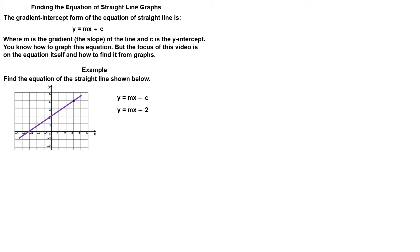To find the gradient, we choose two known points. Starting at the y-intercept, from left to right, go right 3 units and up 2 units. Therefore, the gradient is 2 over 3. And the equation of the line is y = (2/3)x + 2.